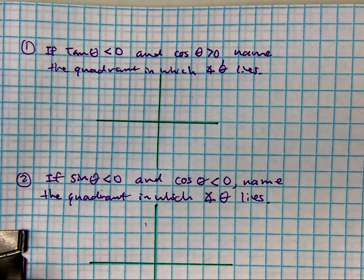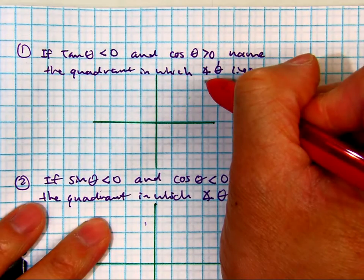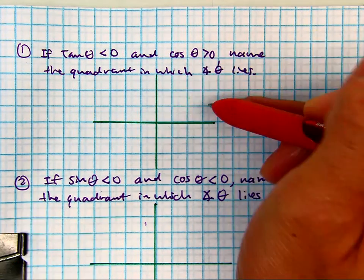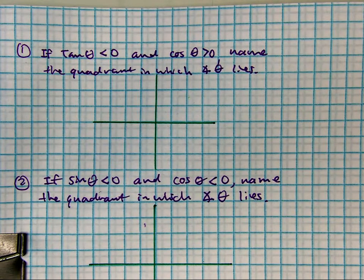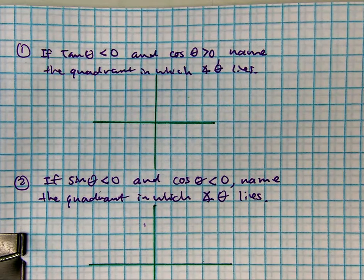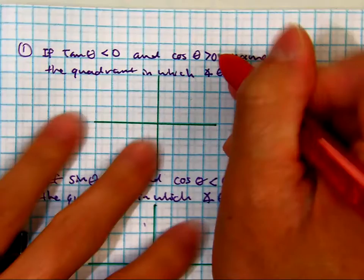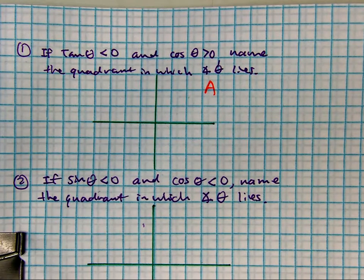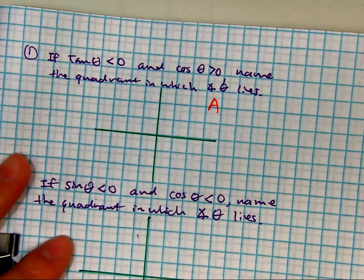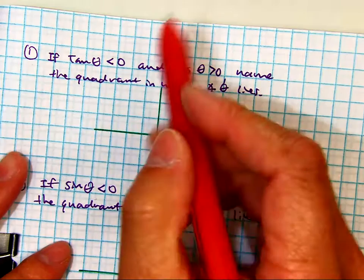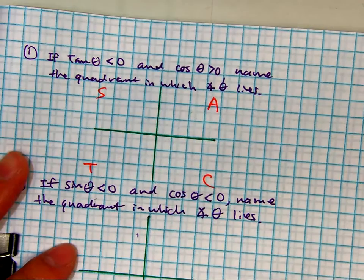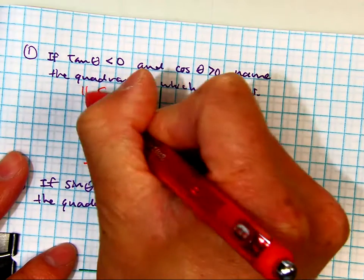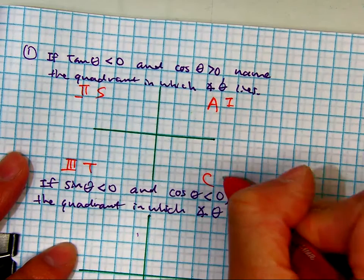Janet, tell me the acronym we learned yesterday. And you're going to tell us the quadrant numbers. One, two, three, four. Thank you.